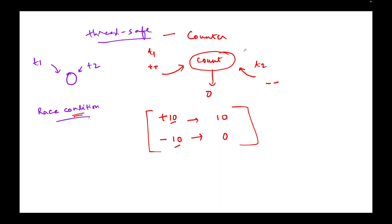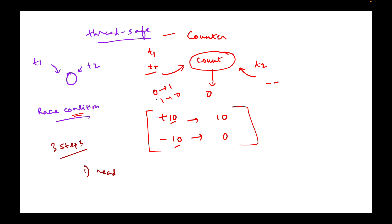You might wonder: it is just a simple increment and decrement operation — what is the problem? The problem is that any kind of update like this happens in three steps. The value is first read, then modified, then written back into memory. When T1 is trying to modify, it will first read the value of count, then modify it — either incrementing or decrementing — and finally write that variable back into memory.